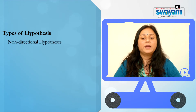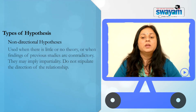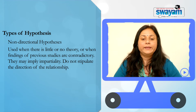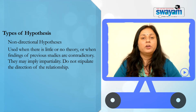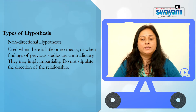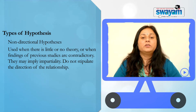Non-directional hypotheses, on the other hand, are used when there is little or no theory or when findings of previous studies are contradictory. They may imply impartiality and do not stipulate the direction of the relationship.